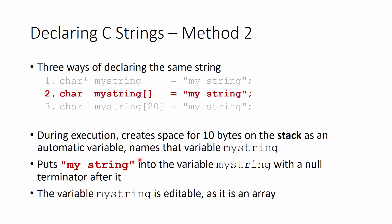The second declaration method creates space for 10 bytes on the stack as an automatic variable — only during execution, not during compilation. The 10 characters come from the 9 visible characters plus the null terminator. That is all stored on the stack as manipulatable memory. Using this declaration, the string is editable as an array. With the exact same code that previously caused a seg fault, because we've defined the string as mutable, we can manipulate the fourth bucket inside the array, change it to a capital Q, and it prints out just fine.